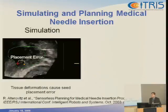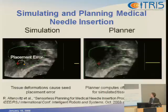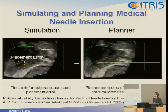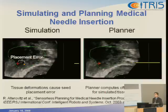What we've been looking at is developing a biomechanical simulation that tries to predict these tissue deformations. We can then use that simulation in an optimization routine to try to minimize the effect of these placement errors. I can show that here on the right — if we insert the needle somewhat higher than the target and somewhat deeper, then we can reduce that placement error.